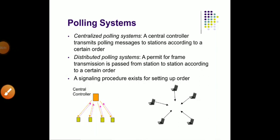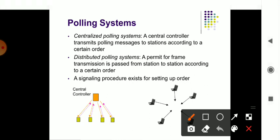Today we'll be discussing the concept of polling system. A polling system is a centralized system where you can get information from a main system, through which you are sending and receiving messages. You can have a central system through which communication happens. It also involves the concept of a distributed system, where information is distributed from one end to multiple stations at a time.